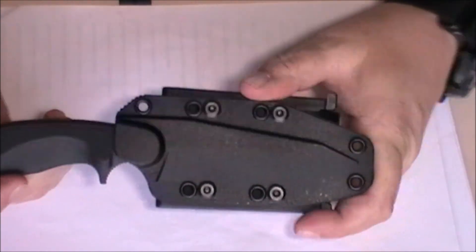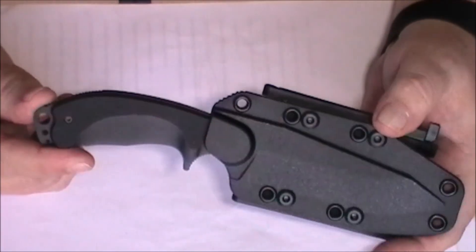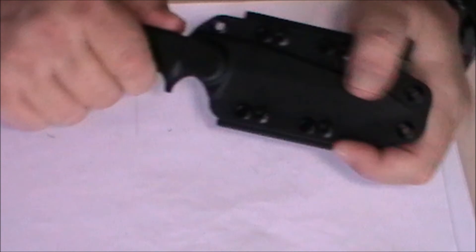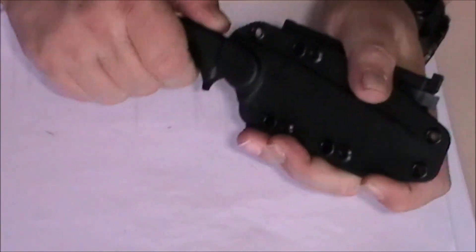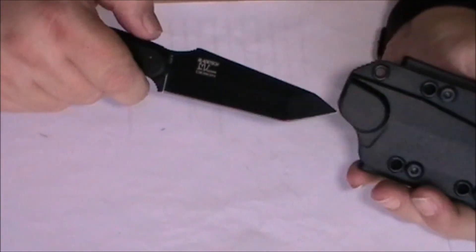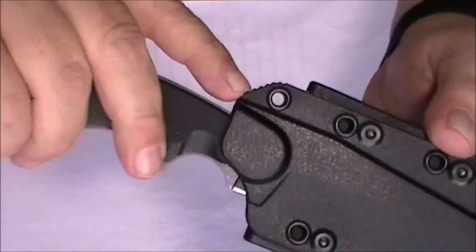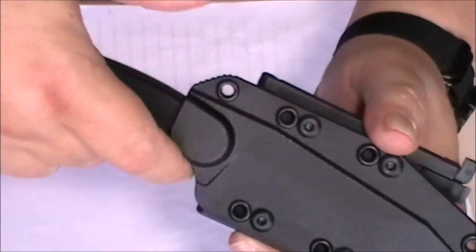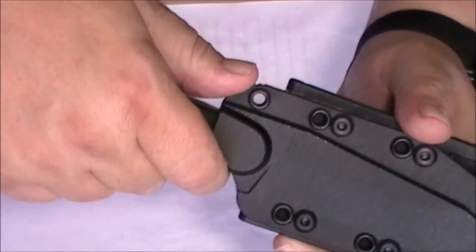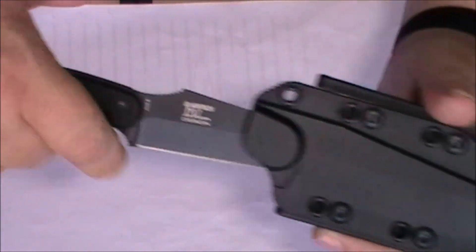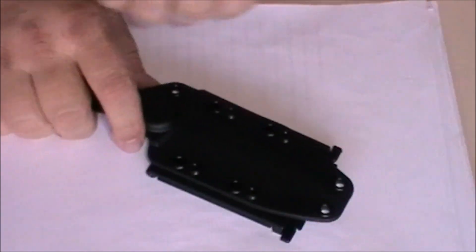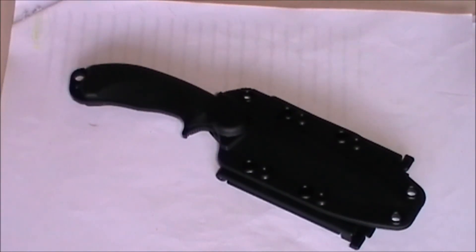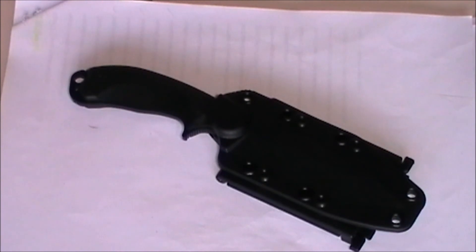The sheath itself—listen—it really does retain the knife very well. It doesn't want to come out without a bit of leverage. Got a little bit of jimping on there. Thumb against that, finger against the choil, and out it comes. If somebody just grabbed it from behind, they would find it quite hard to just yank that out of that sheath. I know we've played with this, and I'm right in what I say.